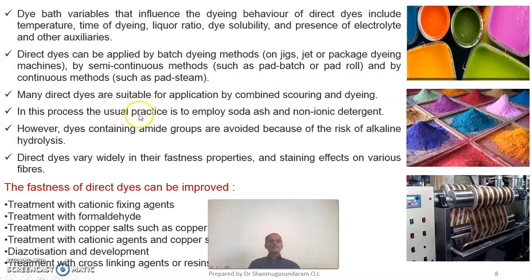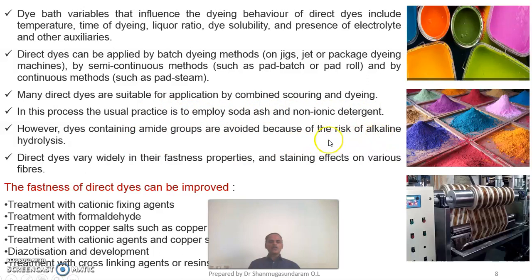Many direct dyes are suitable for application by combining the scouring process with the dyeing process. In this process, the usual practice is to employ soda ash with a non-ionic detergent. However, dyes containing amide groups are avoided because of the risk of alkaline hydrolysis. Direct dyes vary widely in their fastness properties and staining effects on various fibres.